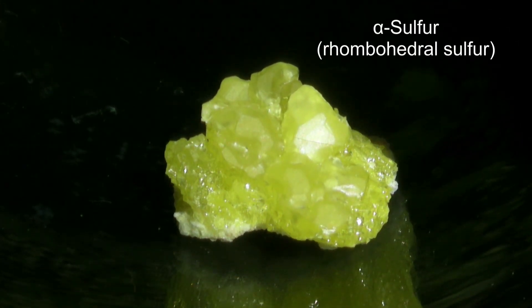Solid sulfur has several allotropes. One of the most common ones is Alpha Sulfur, known as Rhombohedral Sulfur, which is shown here. Another common allotrope is Beta Sulfur, which is also called Monoclinic Sulfur.